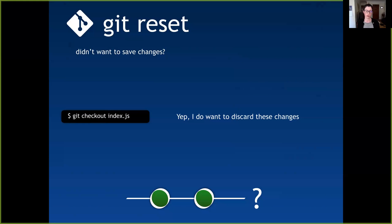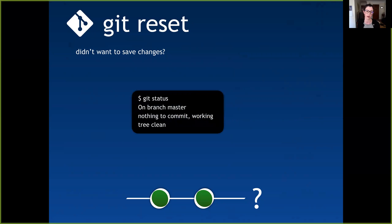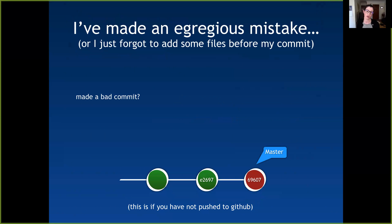If you do want to get rid of those changes — I'd only recommend this for something minor or if you accidentally hit save and want to undo before a merge — running git checkout on that file name will untrack and clear all changes made to that file. Then if you run git status, you'll see you're back to a clean working directory.